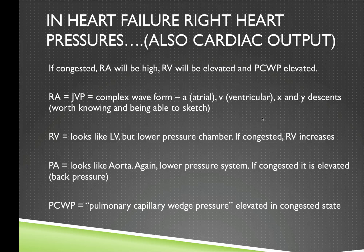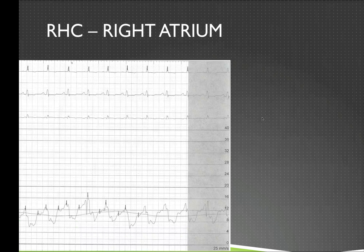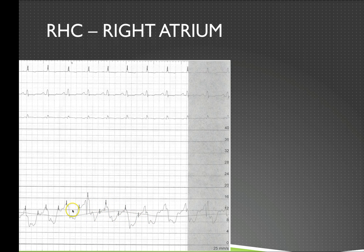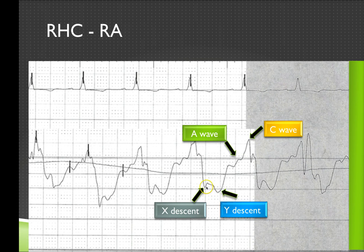Pulmonary capillary wedge pressure correlates with left atrial pressure, and if the patient is congested we expect a rise in this pressure. Looking at a right atrial tracing in a patient with heart failure: firstly, you can see a respirometer showing variation with respiration — pressures vary with inspiration and expiration. Secondly, the right atrial pressure is a complex waveform. In more detail: there are X and Y descents corresponding to valve opening, an A wave corresponding to atrial contractility, and a C wave corresponding to tricuspid valve closure. It's worth being able to sketch these pressure tracings.